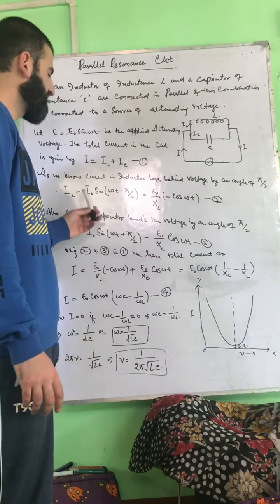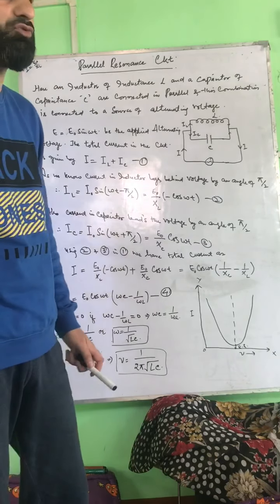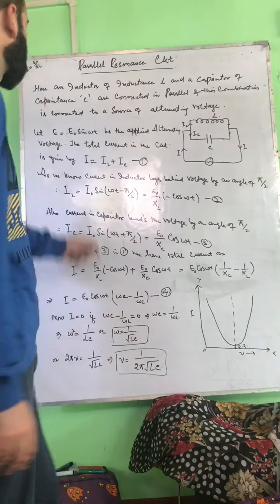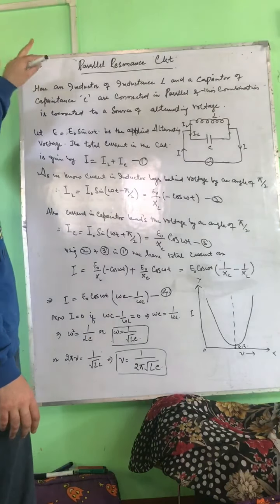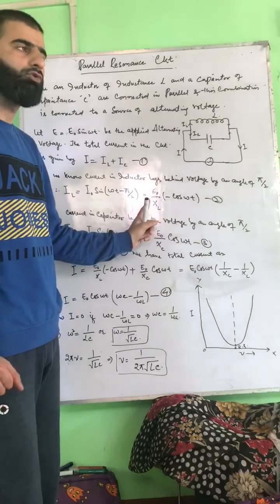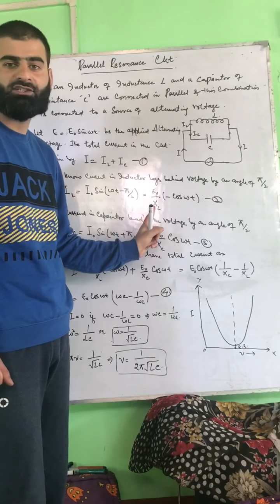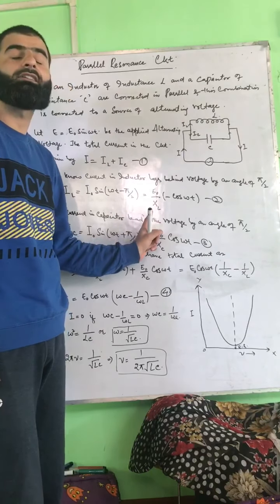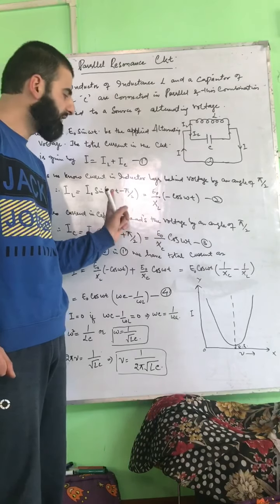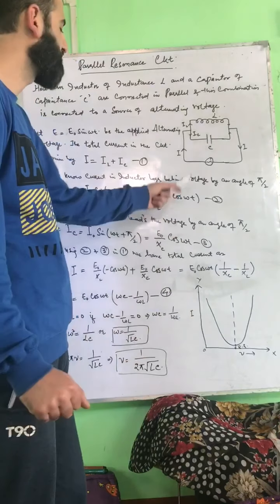We can replace I₀ with E₀ divided by the inductive reactance XL. Since sin(ωt − π/2) = −cos(ωt), the inductive current becomes IL = −(E₀/XL) cos(ωt).